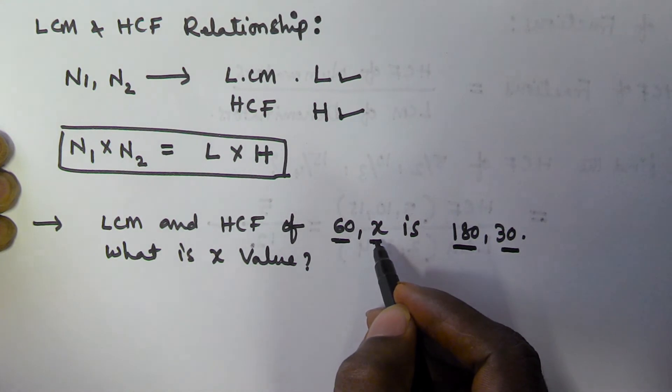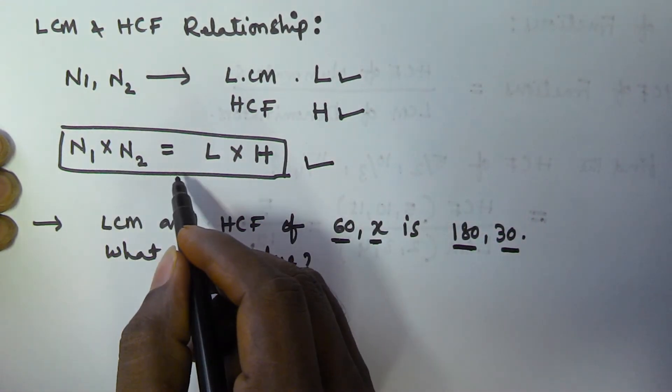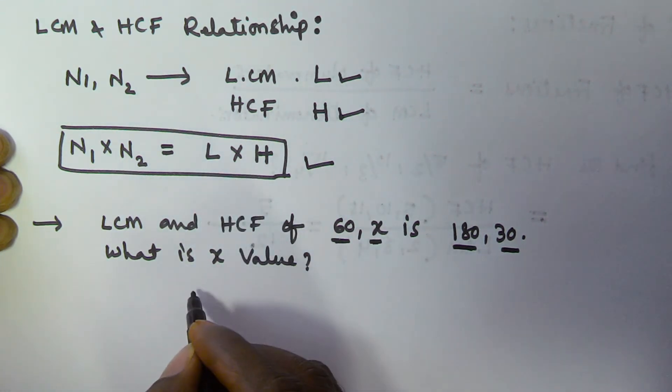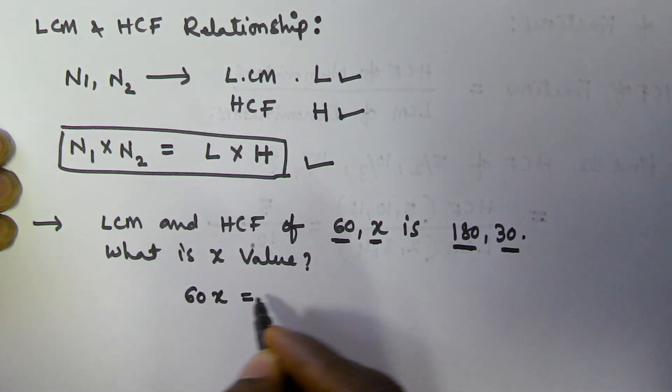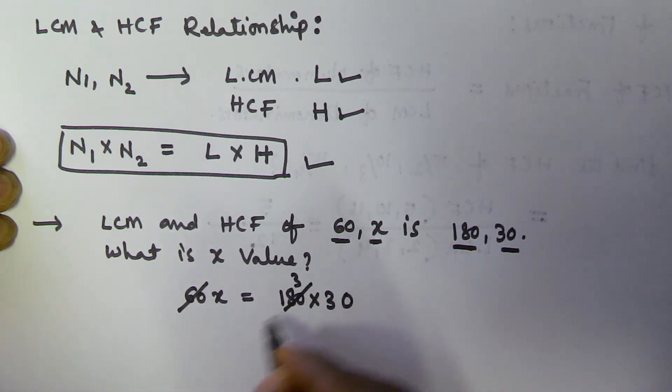So according to this formula, the multiplication of LCM and HCF, that means 60 times x is equivalent to 180 into 30. So 60x equals 180 times 30, so x is equal to 90. So that means the second number is 90.